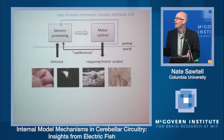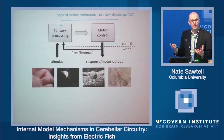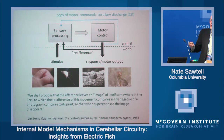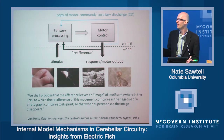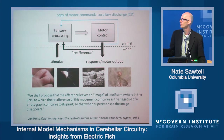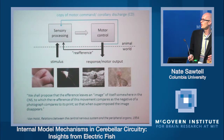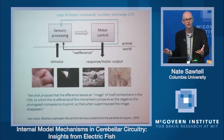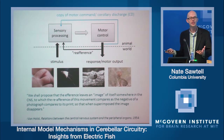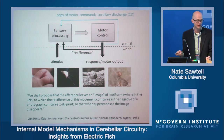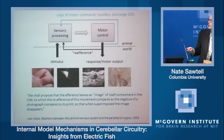The idea is that sensory regions could use this corollary discharge to generate a model that predicts the sensory consequences of motor commands. These ideas were formulated first by Sperry, von Holst, and Middlestadt in the 1950s. To quote: 'The efferents leave an image of itself somewhere in the CNS to which the reafferents of this movement compares as the negative of a photograph compares to its print, so that when superimposed, the image disappears.' This is an early formulation of the idea of a forward model — a prediction of the sensory consequences of a motor command — and this is my entry point into internal models today.